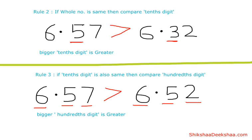Now if the hundredths digit is also the same, then we should check the thousandths digit, and so on. This is how we can compare any decimal number.